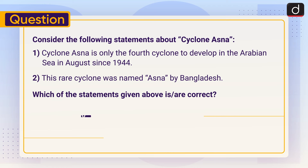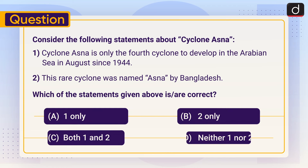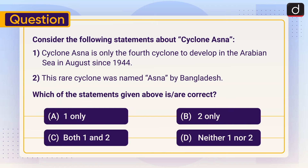Practice question: Consider the following statements about Cyclone Asana. Statement 1: Cyclone Asana is only the fourth cyclone to develop in the Arabian Sea in August since 1944. Statement 2: This rare cyclone was named Asana by Bangladesh. Which of the statements is or are correct — only one, only two, both one and two, or neither one nor two? Give your answer in the comment section.